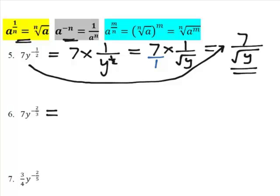The next one, it's 7 times 1 over, the negative power becomes positive at the bottom. And that's 7 over 1, so it's 7 over y to the 2 thirds.